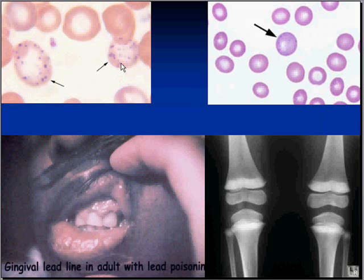Basophilic stippling is not unique to lead poisoning. Another common place that it's seen is in the sideroblastic anemias, which we'll be getting into in the chapter soon to follow on red cells. Sideroblastic anemias are pre-leukemic conditions.